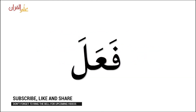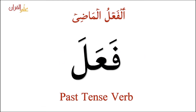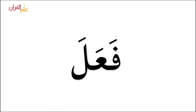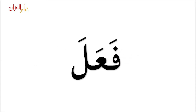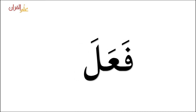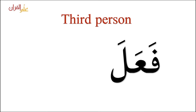For example, fa'ala — this is fa'ala, the past tense verb. It is three letters. Remember, most past tense verbs have three letters. Fa'ala means 'he did.' The pattern or wazn is fa'ala — all fatha, all zabar. This is third person; fa'ala, meaning 'he did,' is third person.